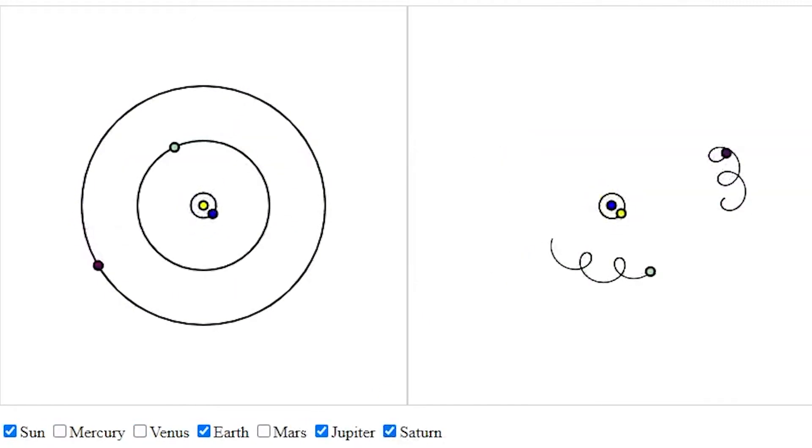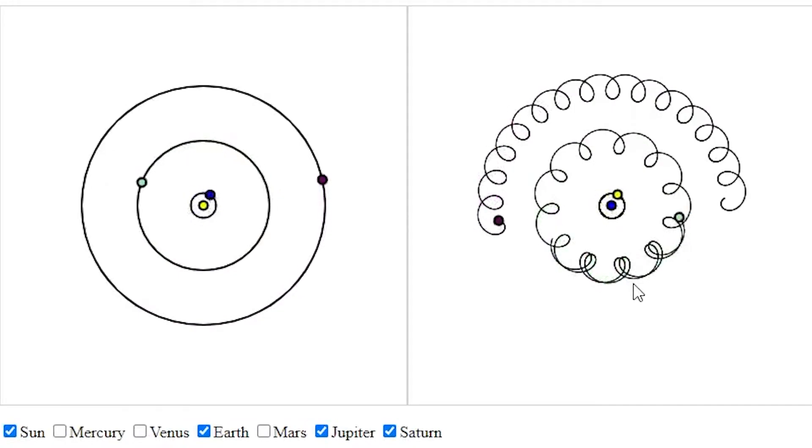So let's now look at the outer planets. Here we have Jupiter and Saturn. We also have Mars, but Mars is a bit more complicated to understand, but in the end it works in the same way. What do we see here?